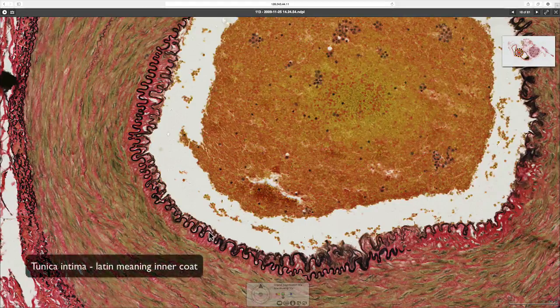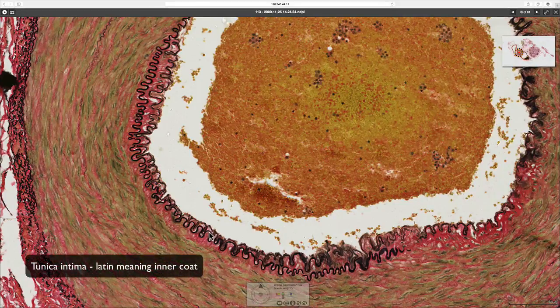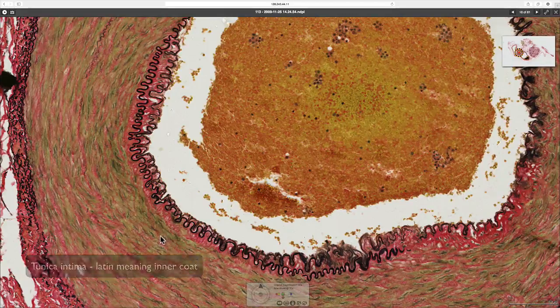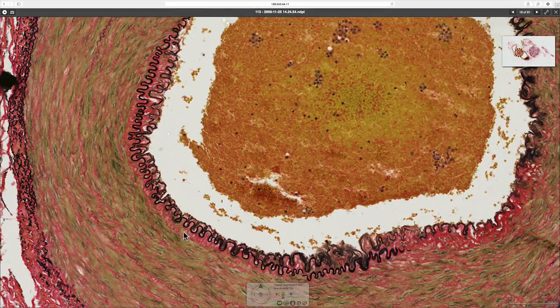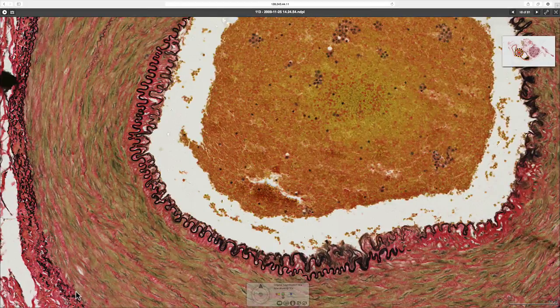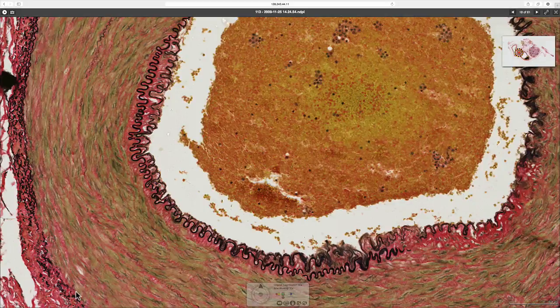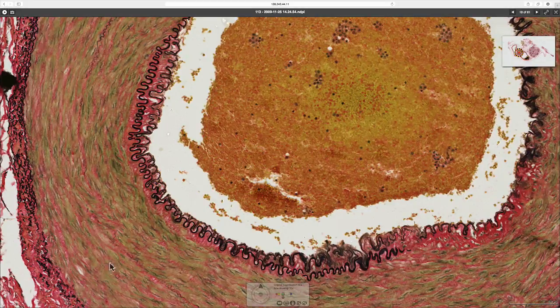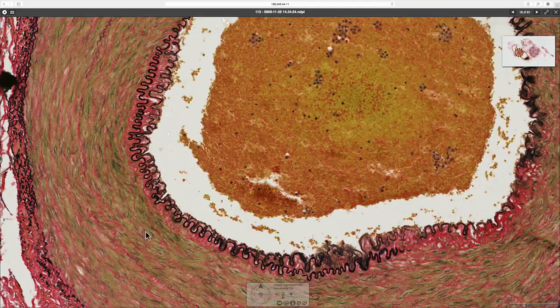Deep to that, here seen in sort of pink and green with strands of black representing elastin, from here all the way out to here is the tunica media. That's the middle layer. The tunica media is made mostly of smooth muscle, and in the case of this particular artery there are plenty of elastin fibers staining black in here as well.